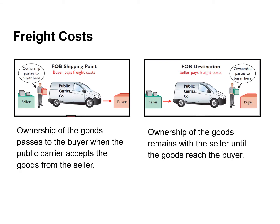FOB shipping point means the buyer pays the freight cost and ownership of the goods passes to the buyer when the public carrier accepts the goods from the seller at the shipping point. Whereas FOB destination, the seller pays the freight cost and ownership of the goods remains with the seller until the goods reach the buyer or the destination.